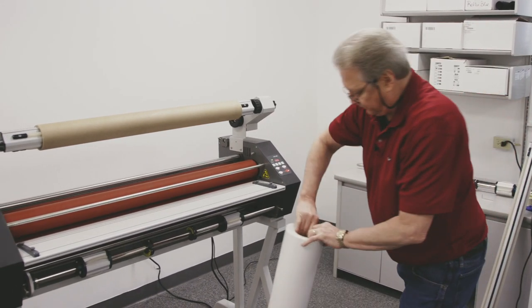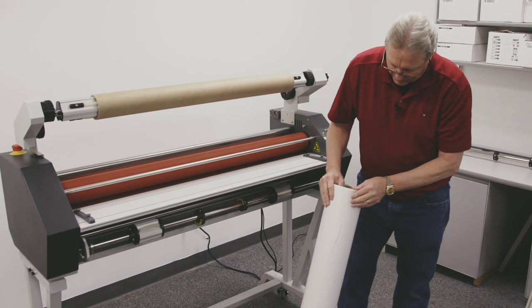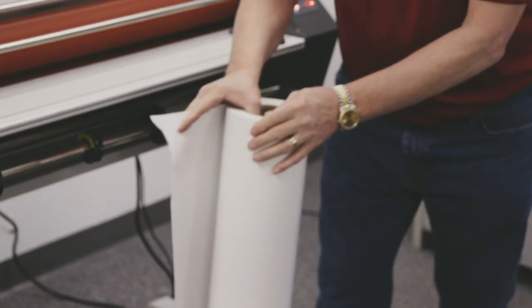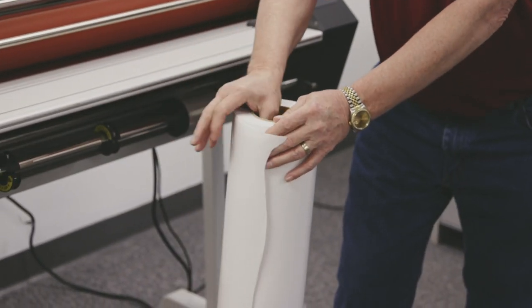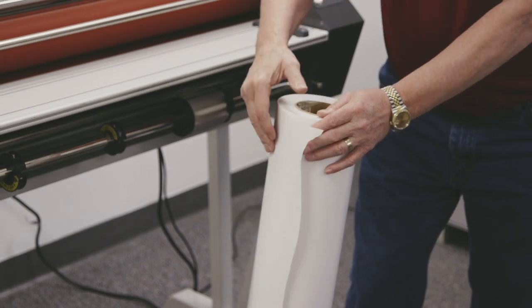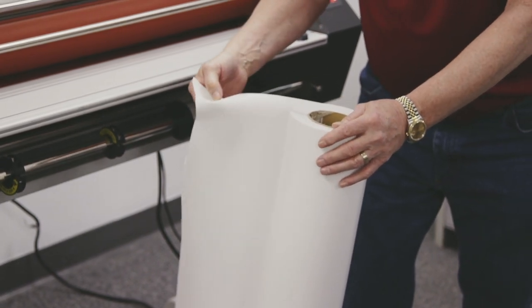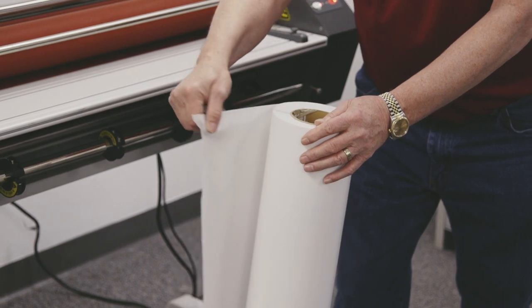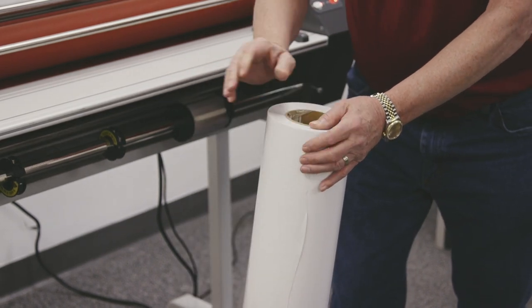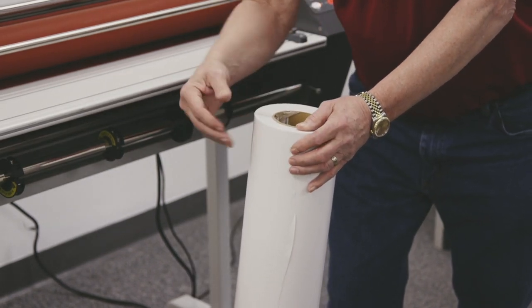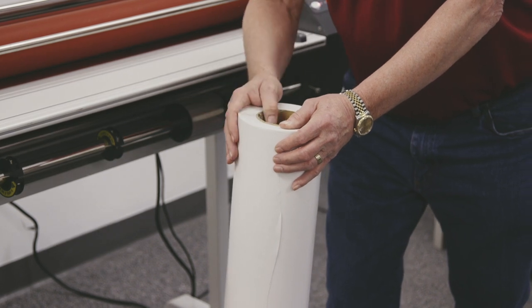PSA film can come wound in two different directions. You have what's called poly in and poly out. Poly in means the release liner is on the inside with the adhesive. Poly out is the release liner is on the outside with the adhesive.